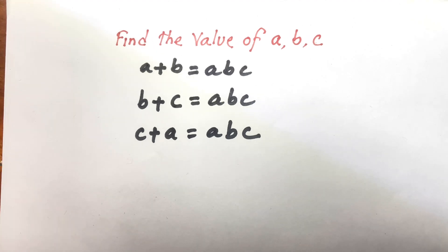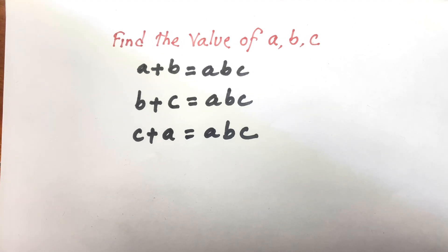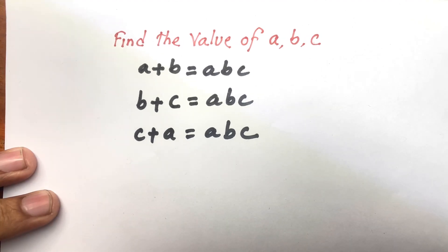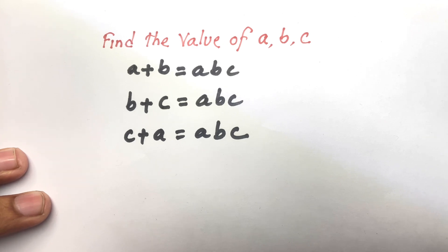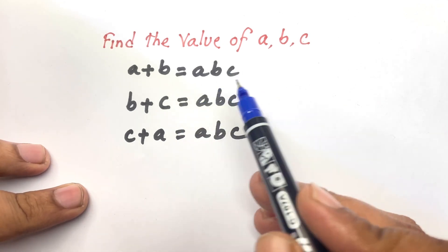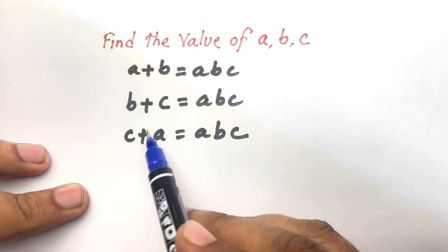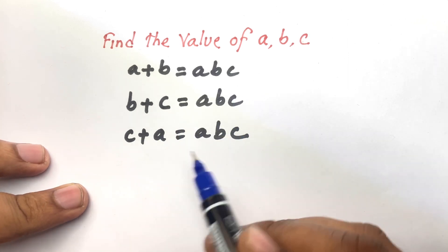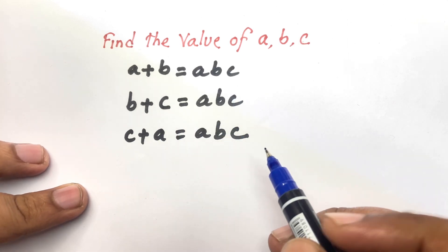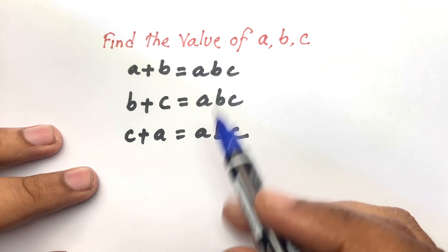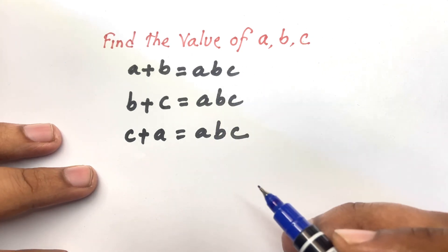Hello everyone, welcome to Russell's classroom. Today I solved this problem. It is a math Olympiad question. This question is A plus B equal to ABC, B plus C is equal to ABC, and C plus A equal to ABC. I find out the value of ABC.